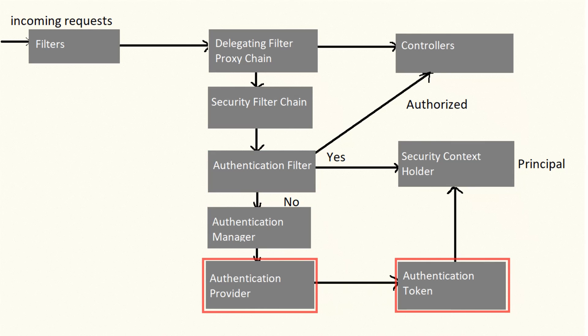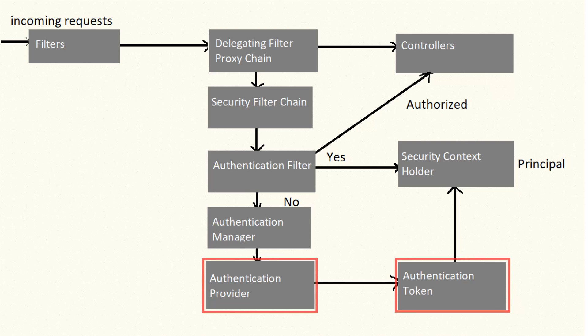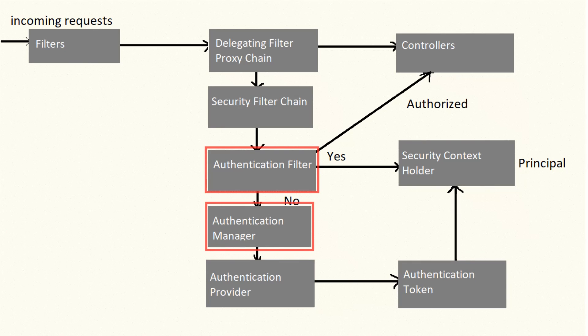The authentication manager is responsible for authenticating the user, and it selects one of the authentication providers to do so. The authentication provider takes the username and password from the request, verifies whether the user is authenticated, and if yes, it creates an authentication token — the information about the logged-in user — and sets it into the security context holder, then returns to the authentication filter.